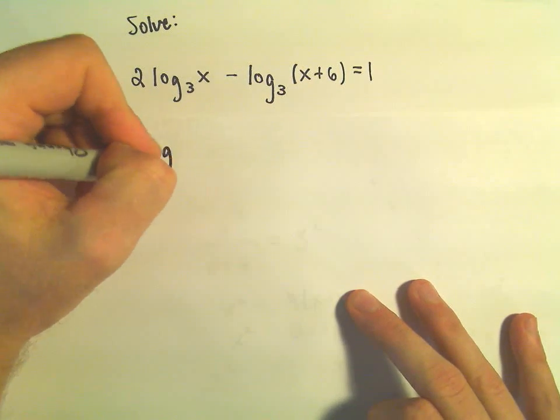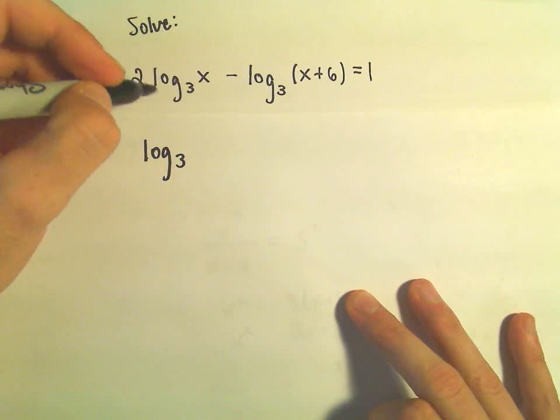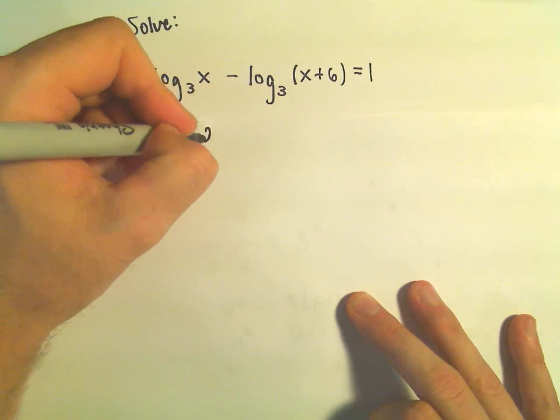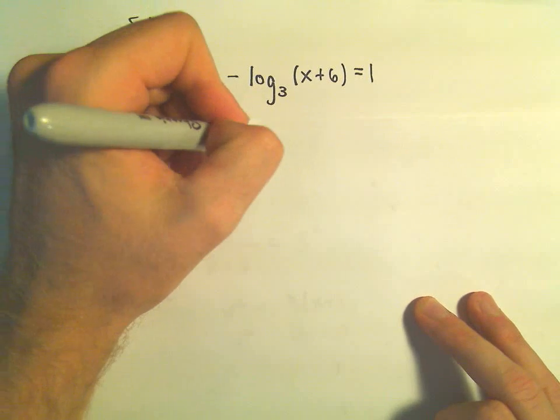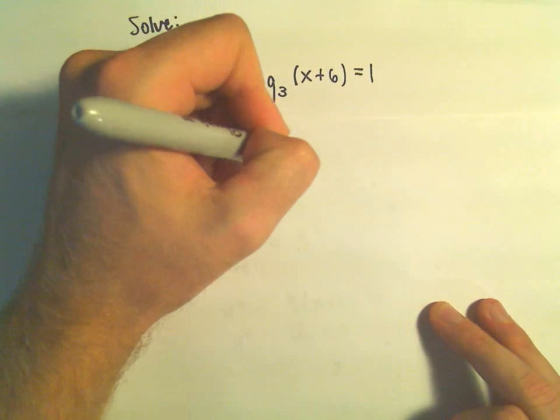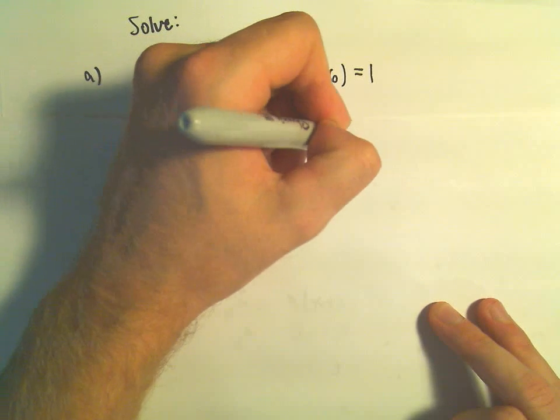So I can rewrite 2 times log base 3 of x as log base 3 of x squared. We can move the coefficient up as an exponent. I'm not going to do anything with my second term here.